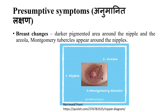During pregnancy, there are melanocyte stimulating hormones that increase. This causes melanin to increase, leading to darker pigmentation of the nipple and areola.